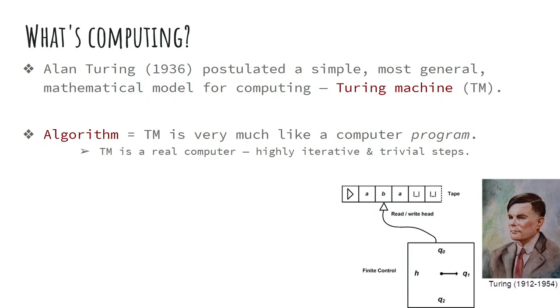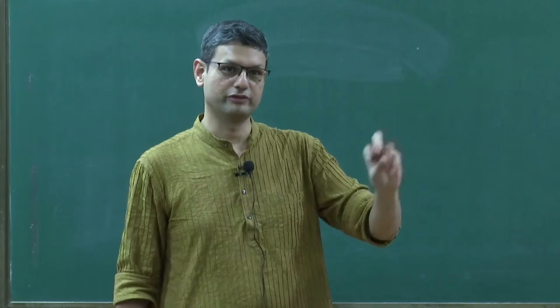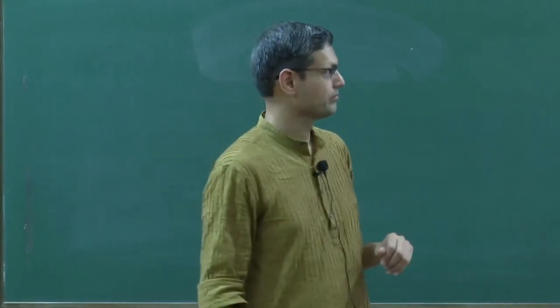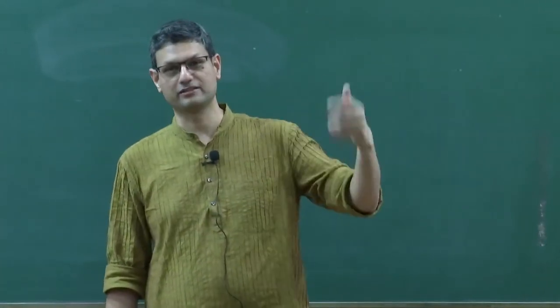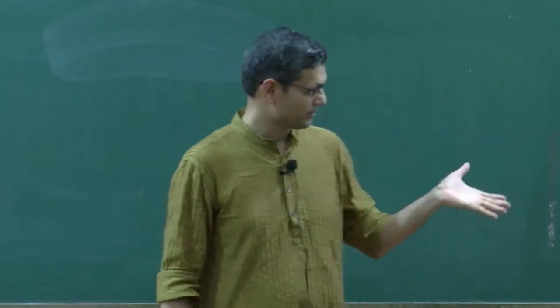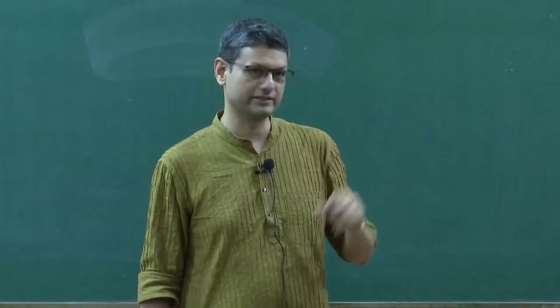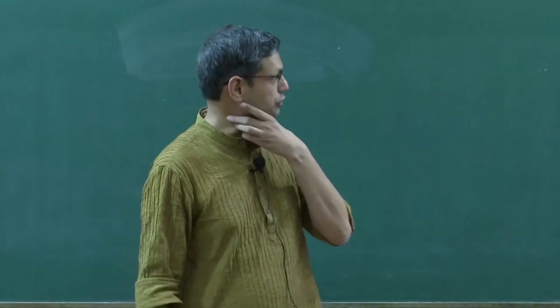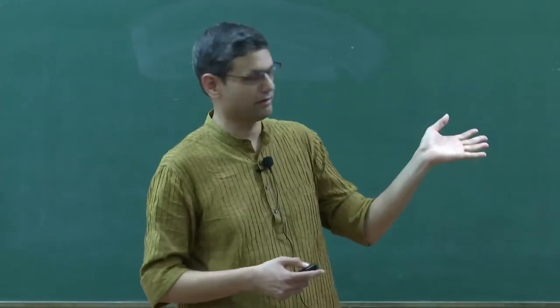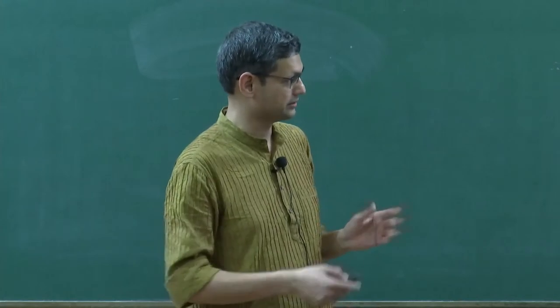The Turing machine is actually a real computer — it is highly creative and every step is trivial. In your computer, within a millisecond inside the microprocessor, very simple things happen: a bit is picked from one register and moved to another, or a bit is flipped. Cumulatively something magical happens. The only difference from a real computer is that on a real computer you have a finite hard disk, while in a TM for mathematical reasons we take an infinite hard disk.